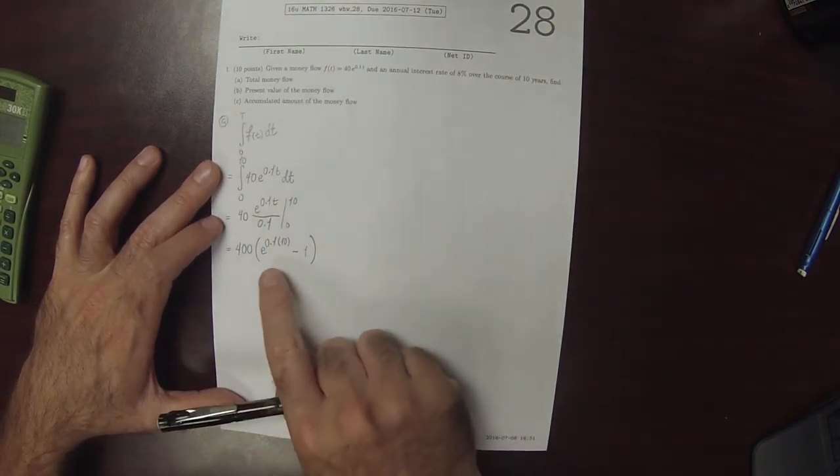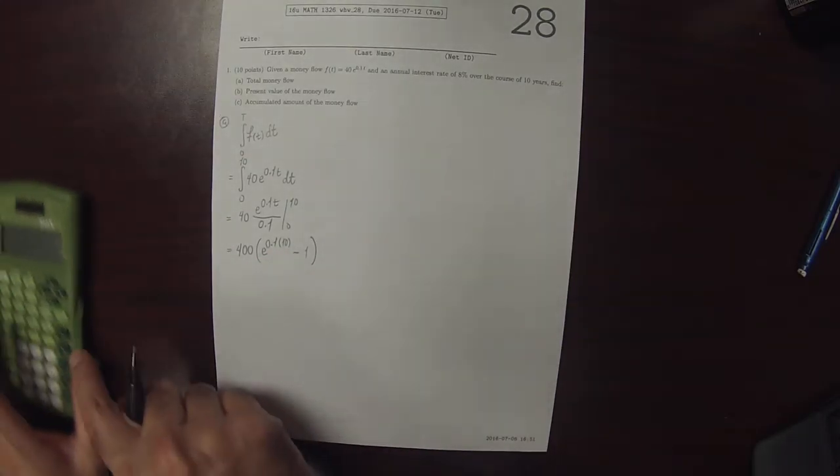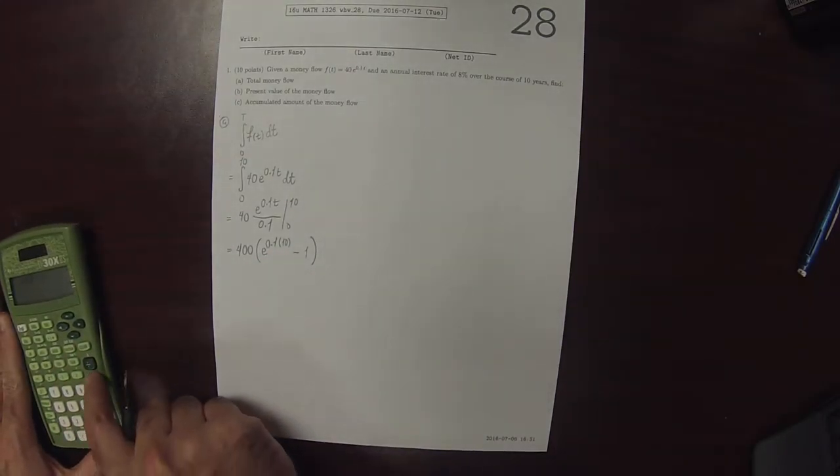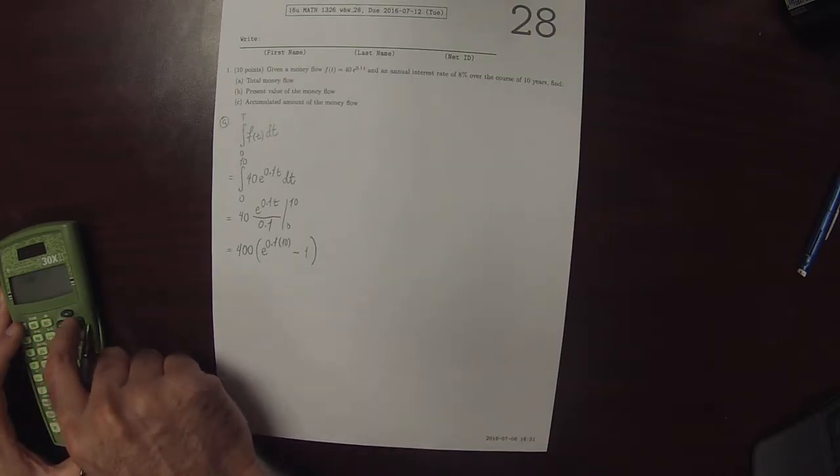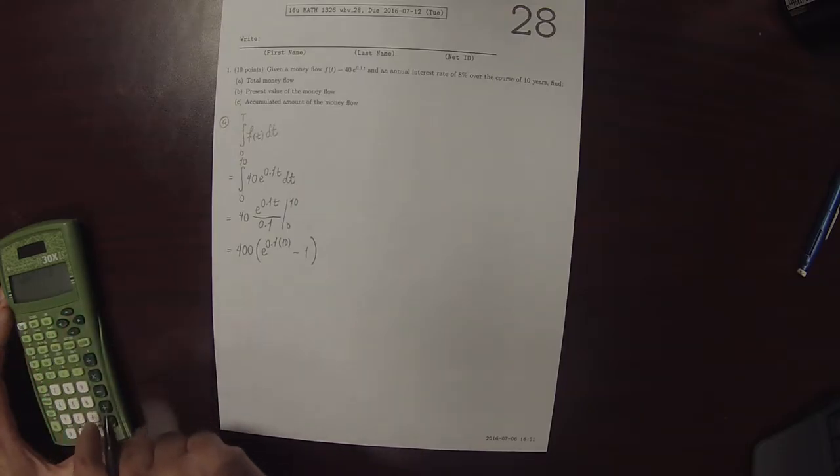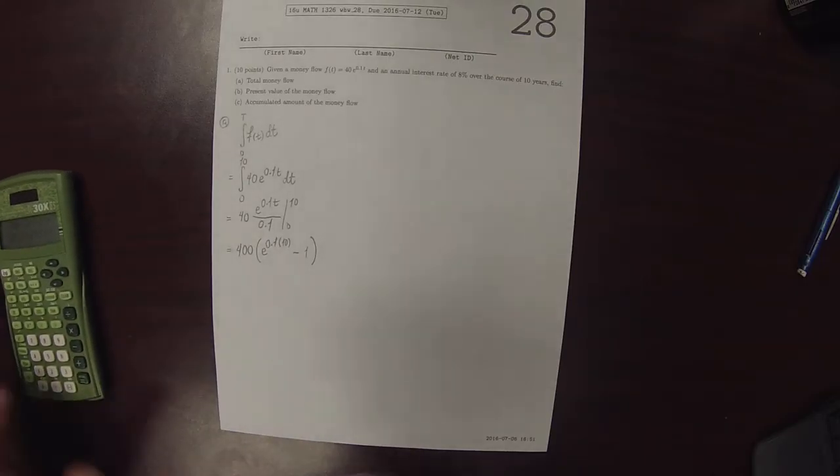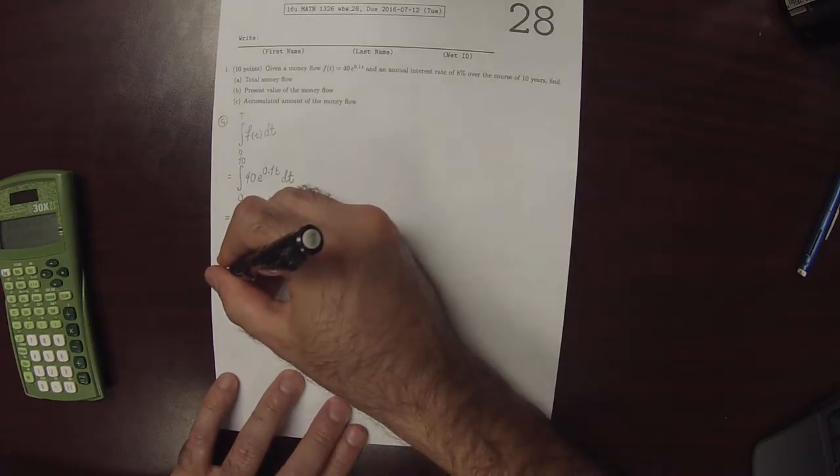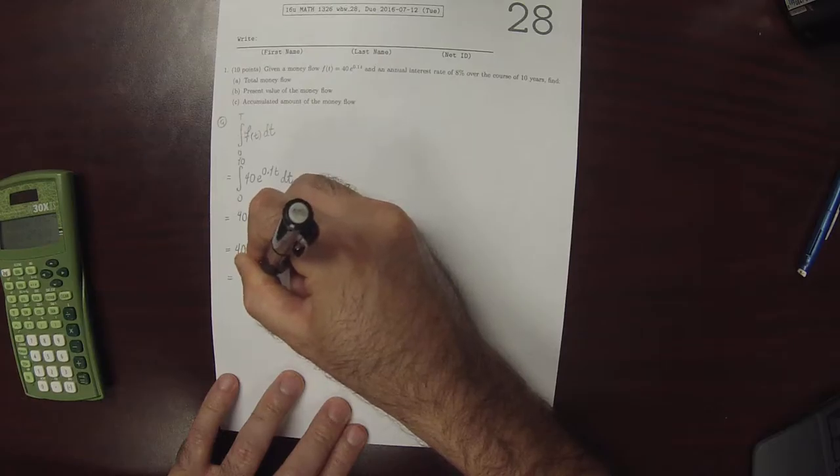And then exponential, so 0.1 times 10 is 1, so this is 400 times e minus 1. So then rounded to the nearest cent, that is 687.31.